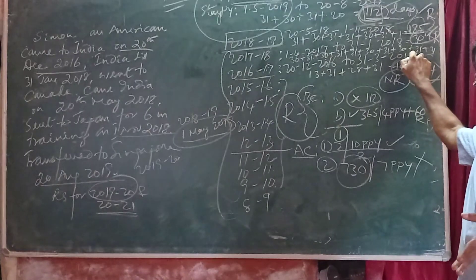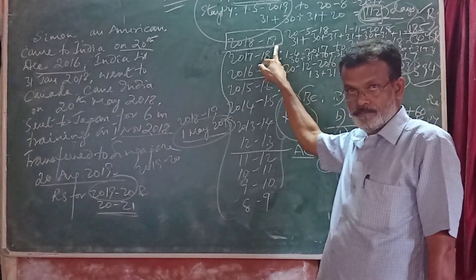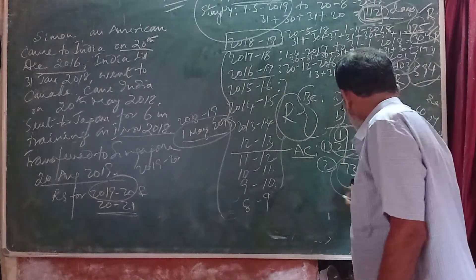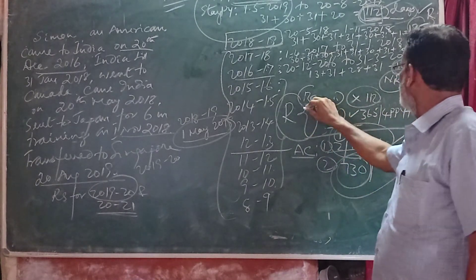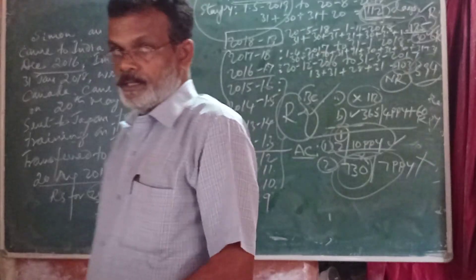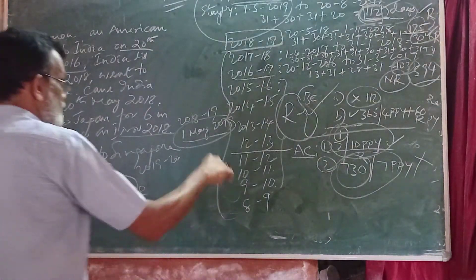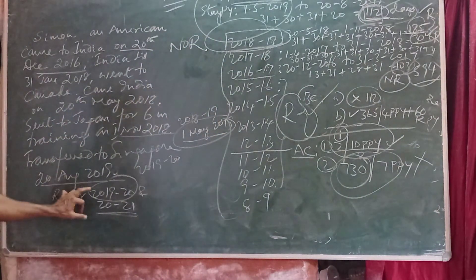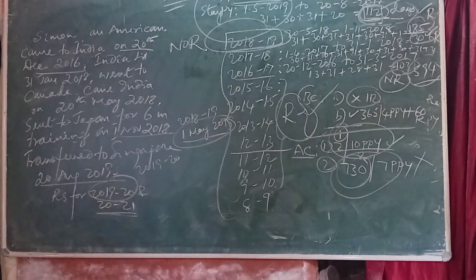The provision says that out of 10 preceding previous years, he must be a resident for 2 years. But he was a resident for only 1 year. Also, he was not in India for 730 days in 7 preceding previous years. So he satisfies only the basic condition to become a resident. Hence, for the previous year 2018-19, relative to assessment year 2019-20, he is called as resident but not ordinarily resident. In conclusion, for both assessment years 2019-20 and 2020-21, he was a not ordinarily resident.